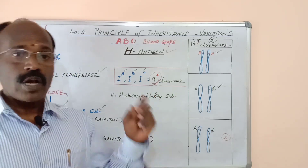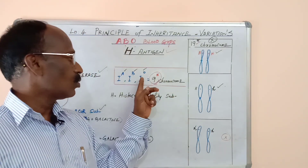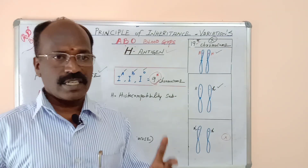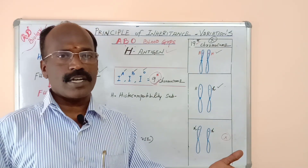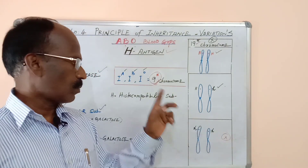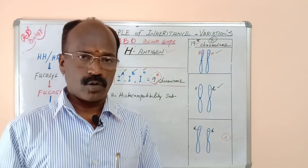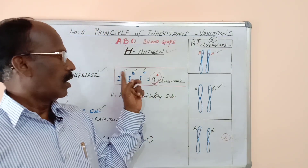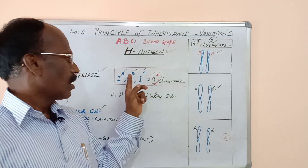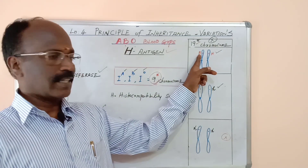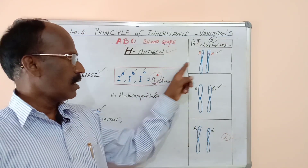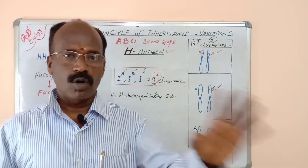Third point: if you have H antigen but your blood group allele is O — a recessive allele — then the H antigen cannot be modified into antigen A or antigen B. So both antigens are absent, and that is blood group O. So: A allele with H allele gives you A antigen; B allele with H allele gives you B antigen; O allele with H antigen gives you blood group O.